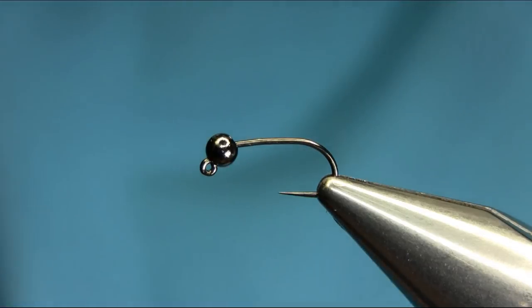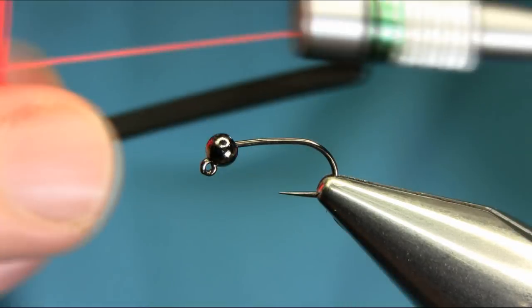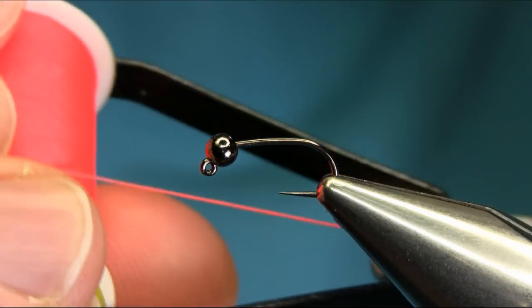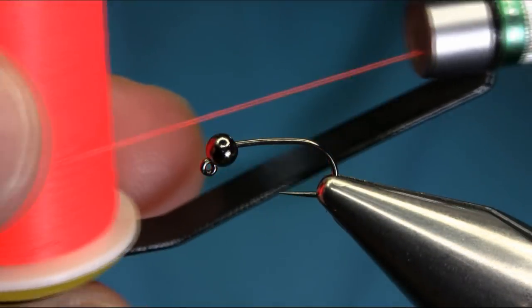Hi everyone, this is a size 14 jig hook with a gunmetal 3 millimeter bead. The first thread I'm going to be using is glow bright hot orange, which is number 5.